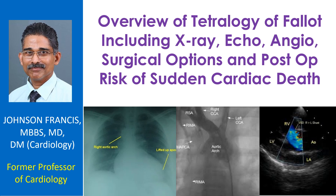The four cardinal features of Tetralogy of Fallot are malalignment ventricular septal defect, overriding aorta, infundibular pulmonary stenosis, and right ventricular hypertrophy. The variability in clinical presentation of TOF correlates with the degree of right ventricular outflow tract obstruction and the size and anatomy of the pulmonary artery and its branches.